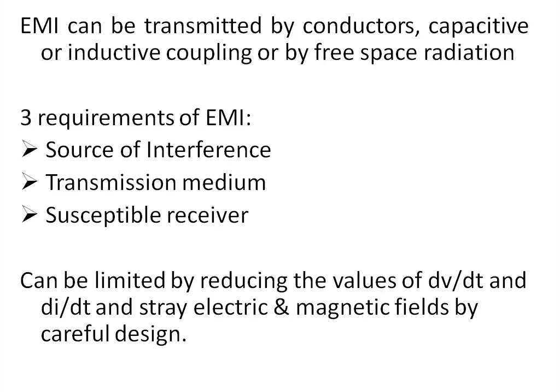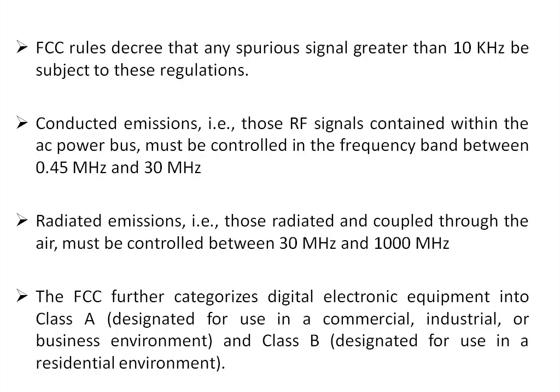EMI can be transmitted by conductors — through wires — or it may be coupled through capacitive and inductive means, or it may be transmitted via free space in the form of radiation. There are three requirements for electromagnetic interference: one is a source of interference, second is a transmission medium which may be a conductor or through air, and third is a susceptible receiver. If you limit any of these three, you can reduce EMI.